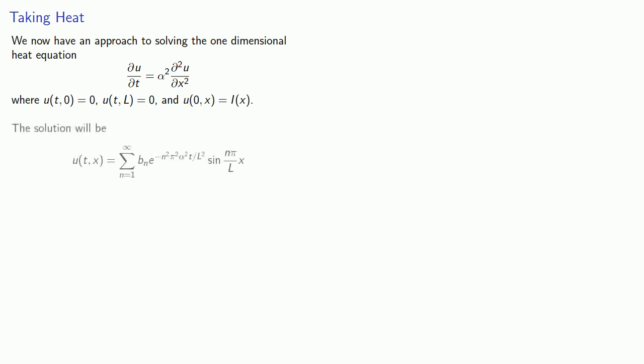And so putting everything together, we now have an approach to solving the one-dimensional heat equation with boundary conditions. Remember, these correspond to the idea that the endpoints are at temperature zero and that we have some initial temperature distribution along the rod. Our solution is going to be a trigonometric series multiplied by an exponential function where the coefficients of our series are going to be found by an integration.